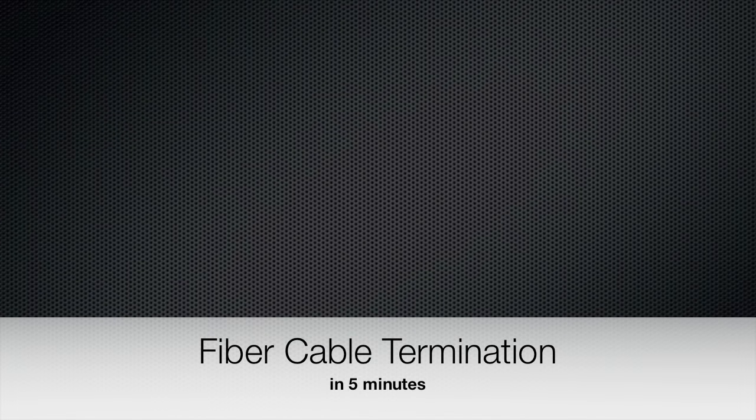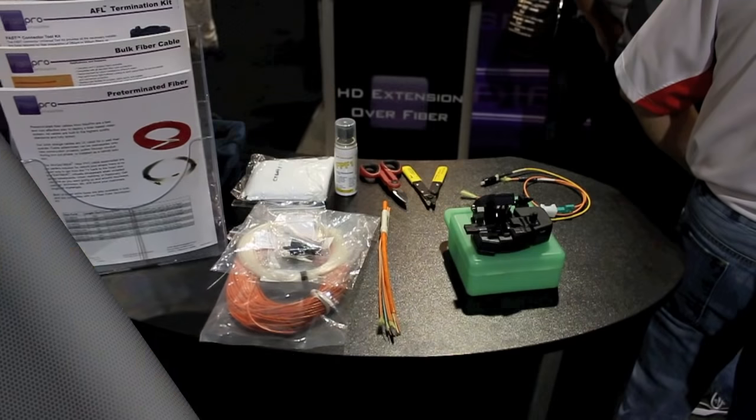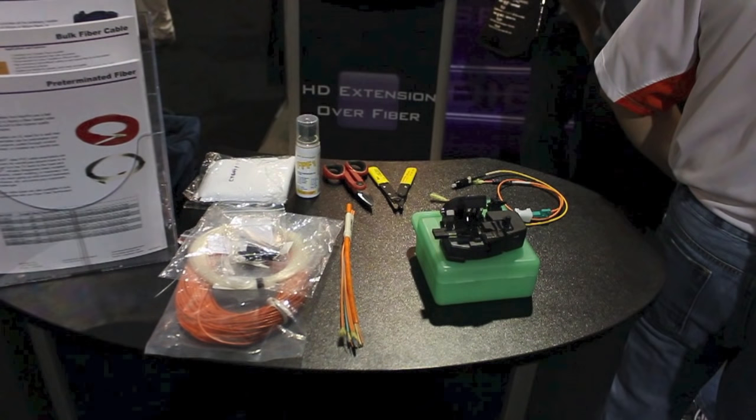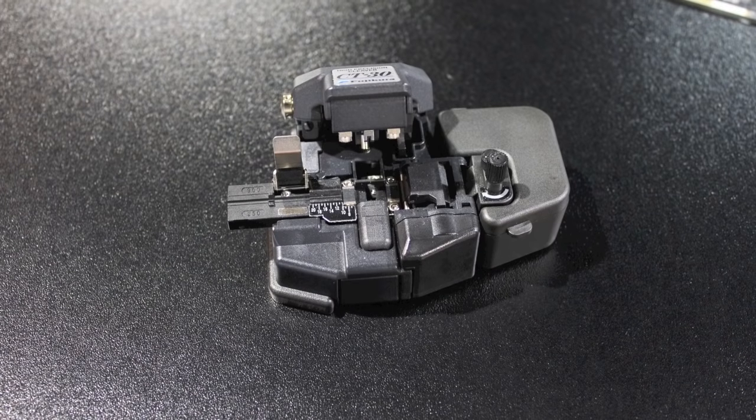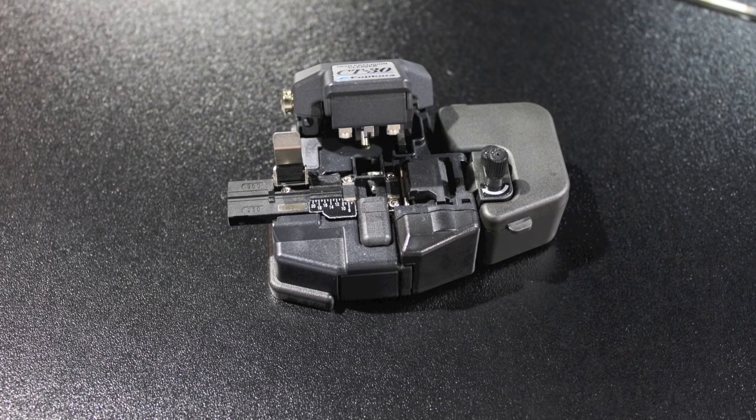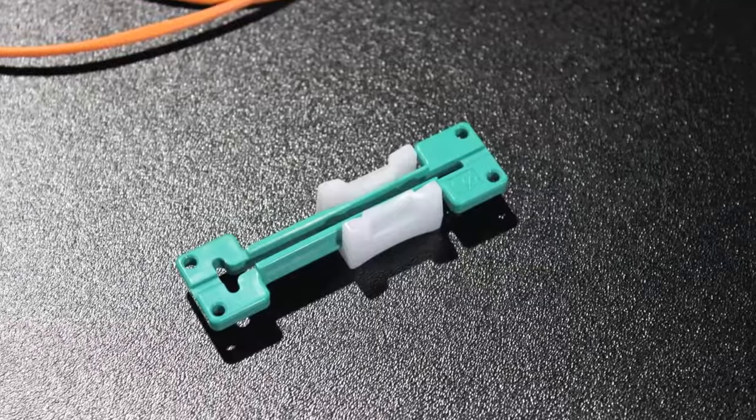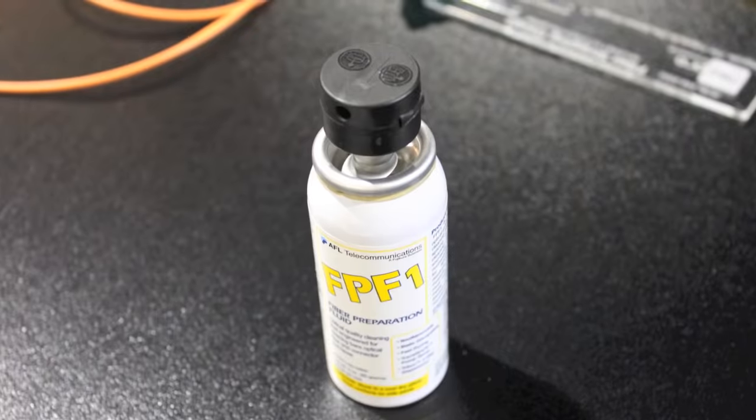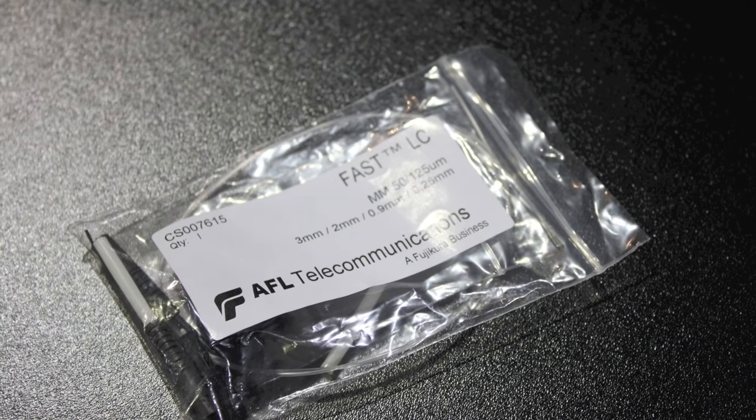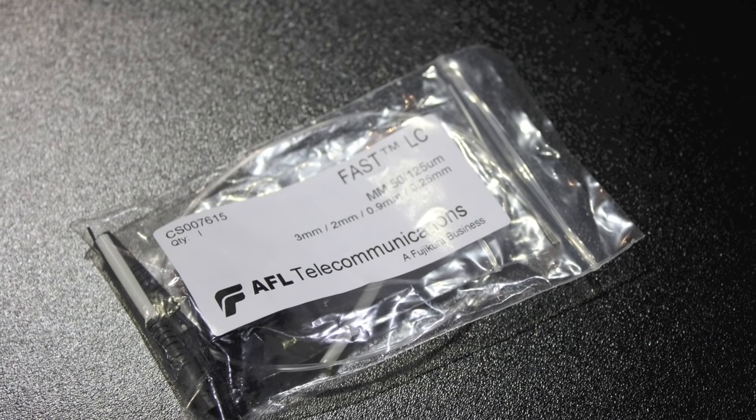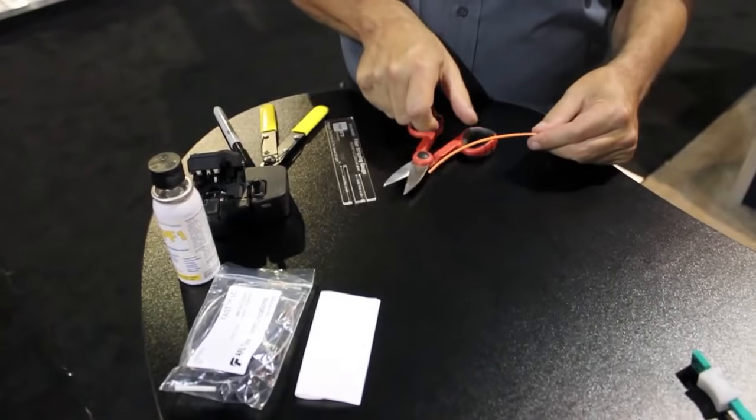Thanks for tuning in to our first product training video shot live at CEDIA 2010. Today we're going to talk about fiber termination with the AFL Fast Termination Kit, which includes your precision cleaver, Kevlar scissors, stripper, cable clamps, gauges, cleaning supplies, and of course the consumable part, the Fast Termination LC Connector Kit.